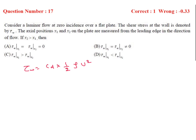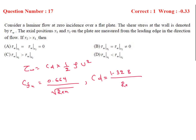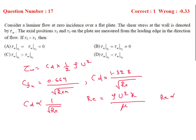From these formulas, C_f is inversely proportional to √(Re). Since Re is proportional to x (Re = ρUx/μ), we get C_f inversely proportional to √x, i.e., C_f ∝ x^(−1/2). Therefore τ_w is inversely proportional to x^(1/2).